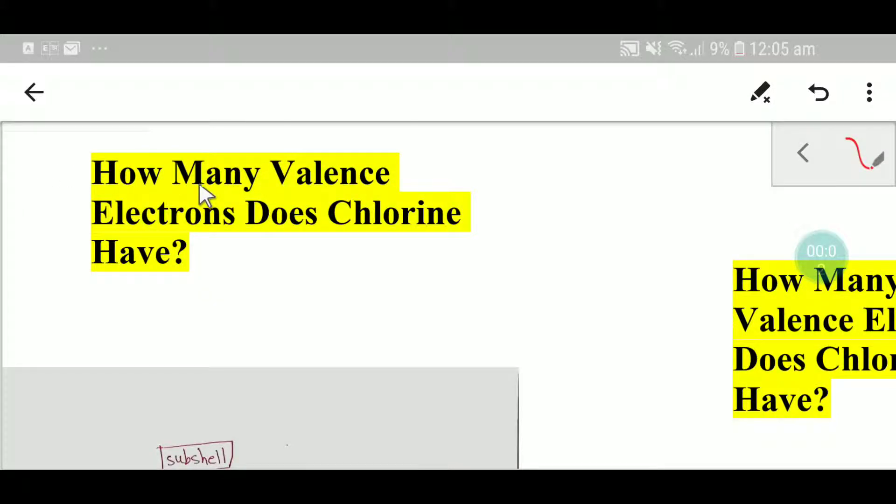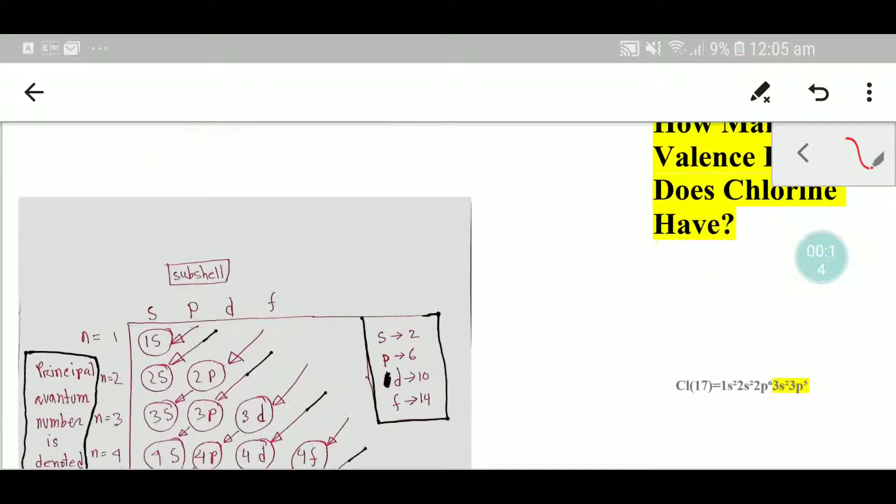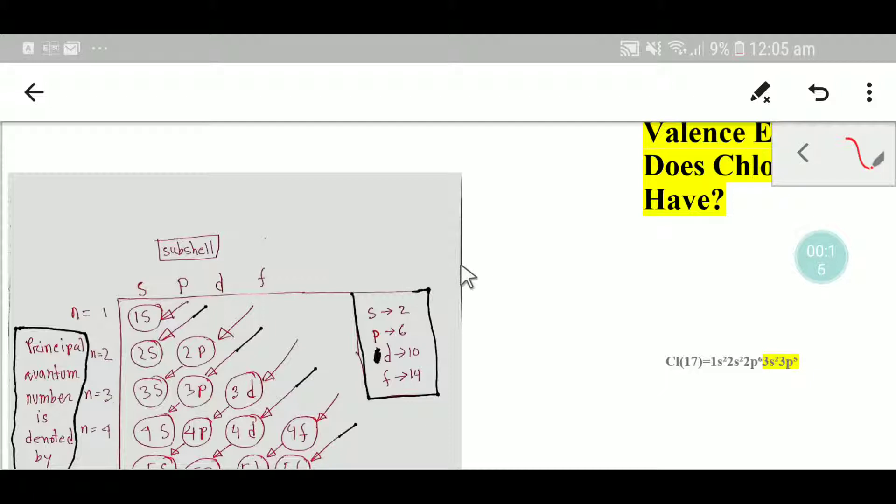Welcome to Chemistry Tutorial 360. Today we are going to learn how to find out the valence electrons of chlorine. From the periodic table, we see that the symbol for chlorine is Cl and its atomic number is 17.